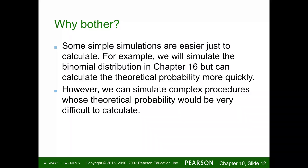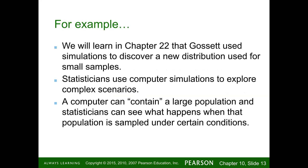In the million-trial simulation, Nick had to write a program that randomly selected cards without replacement across six decks, assigning values and removing cards as they were drawn. We will also learn in Chapter 22 that Gossett used simulations to discover a new distribution used for small samples.